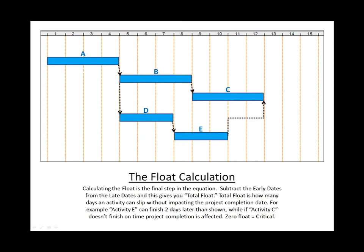Okay, now that we've got our early date numbers and our late date numbers, it's time to calculate the float and see what's critical. Here are the early dates we came up with on our forward pass, and here are the late dates from the backward pass. Now all we do is subtract the early dates from the late dates, and this gives you total float.